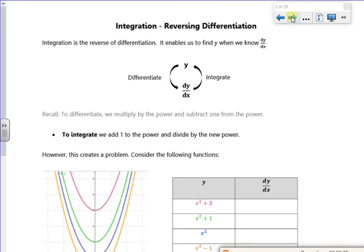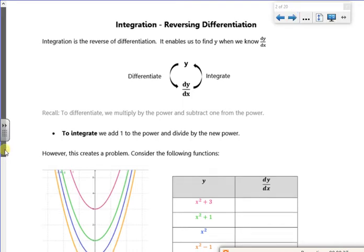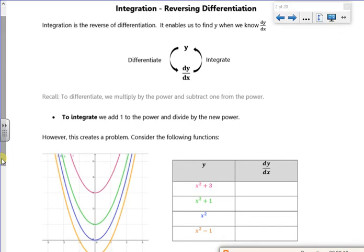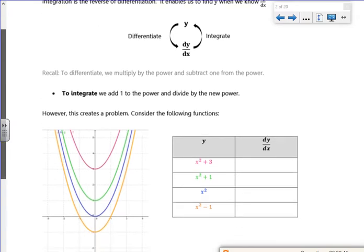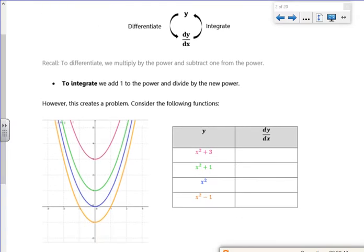So if we start off with y and differentiate it, we get dy/dx. So we go back from dy/dx back to y by integrating. So that's what that little blob there says. So with differentiating, you put the power at the front and take one off the power. So we need to reverse the process. So if we reverse the process, what we do is add one to the power and then divide by the new power.